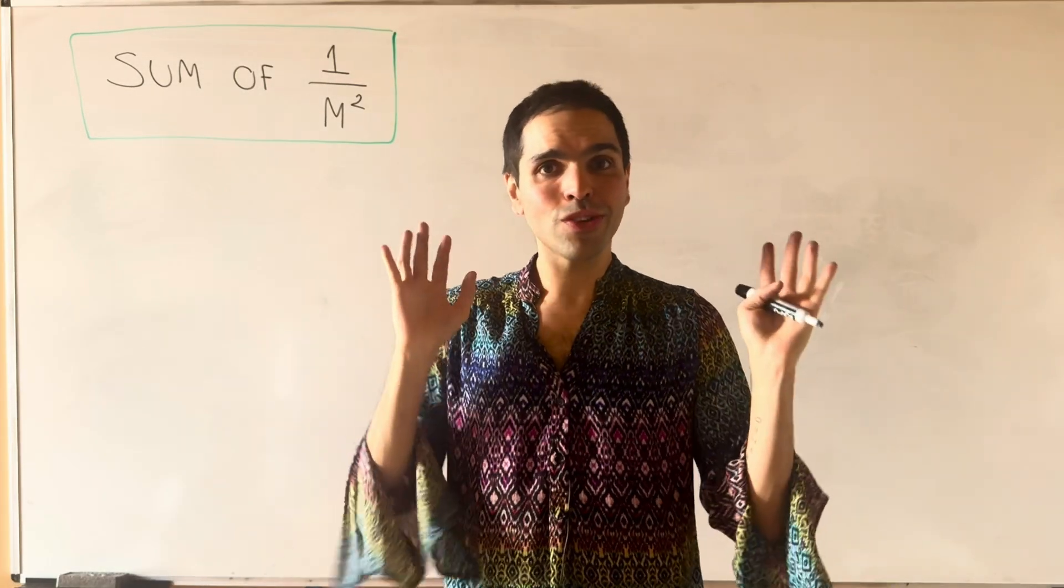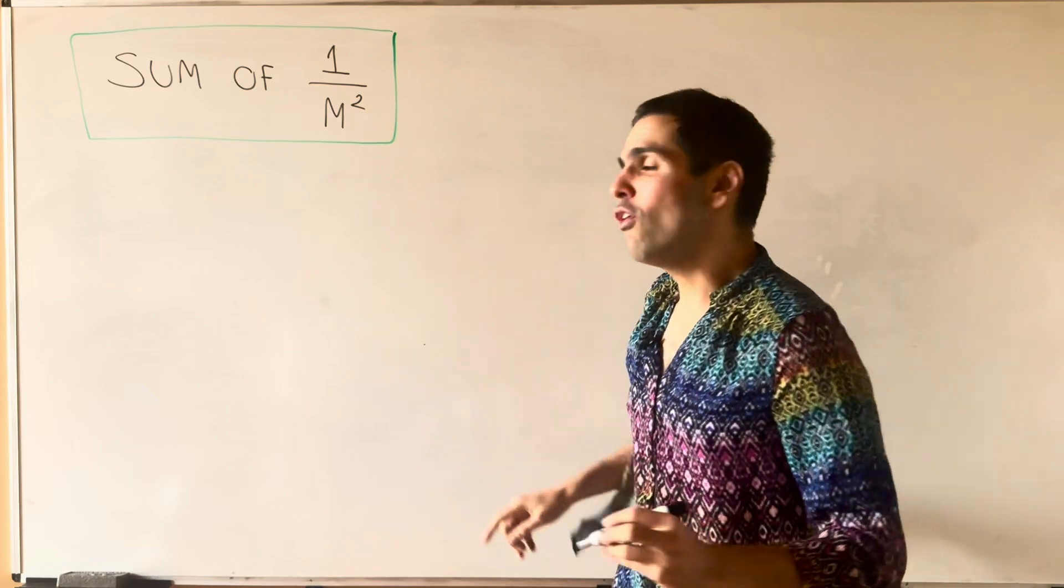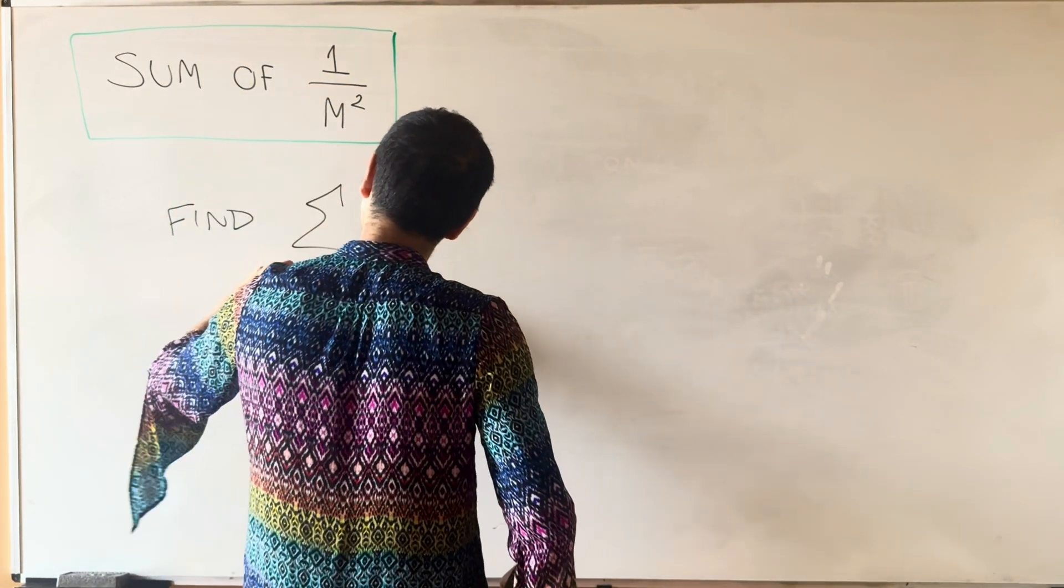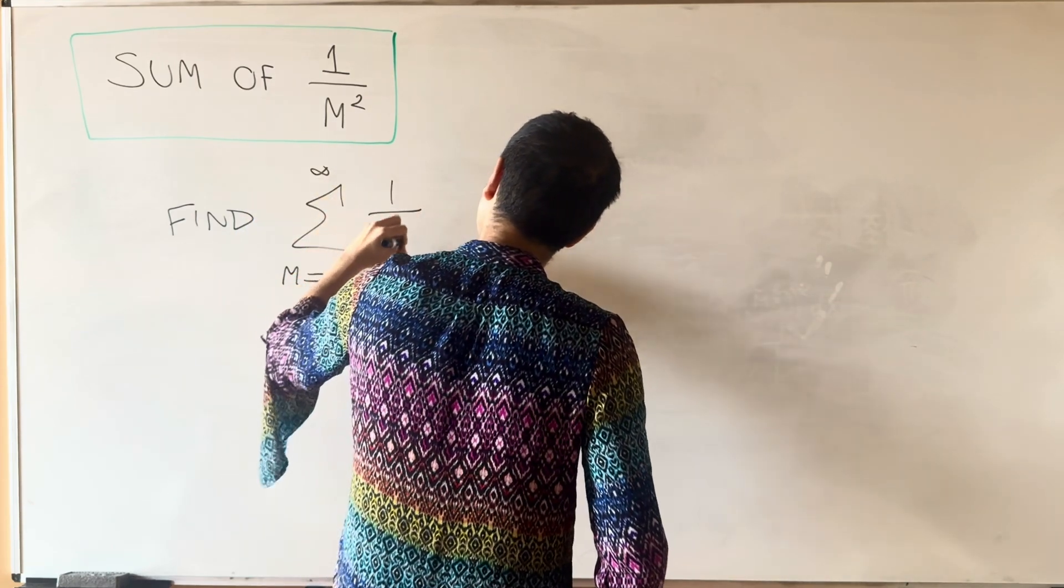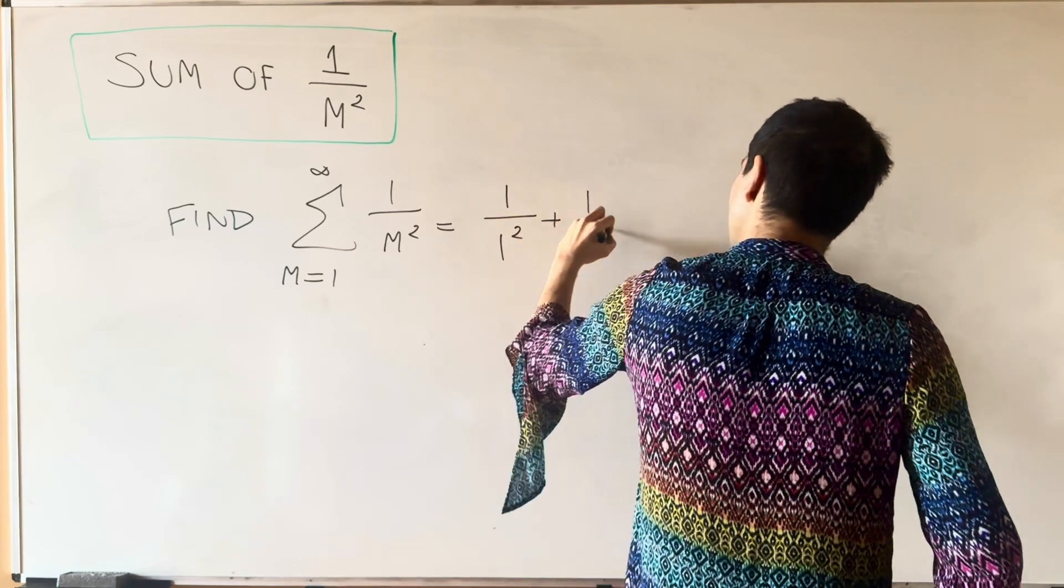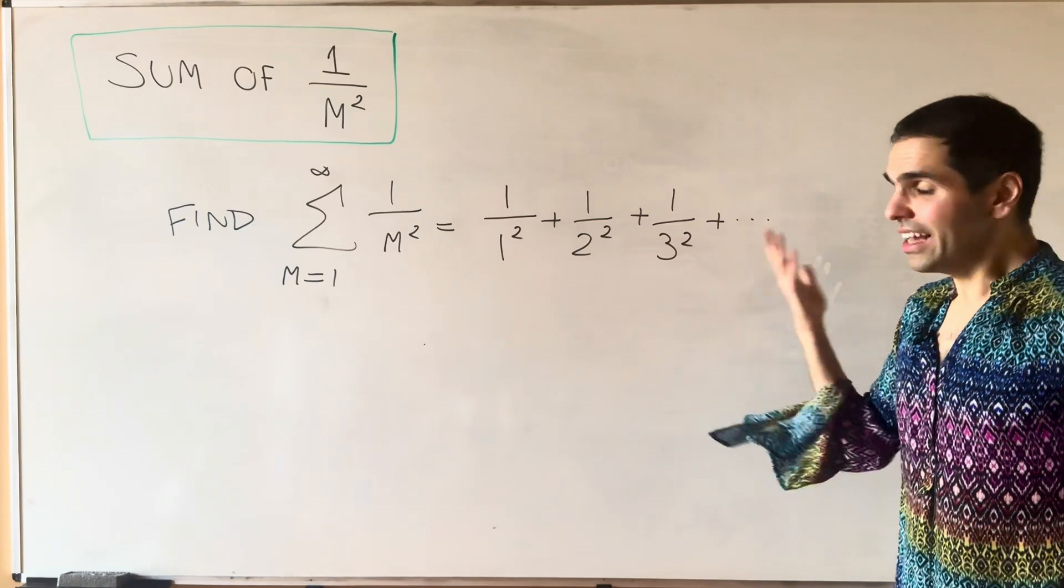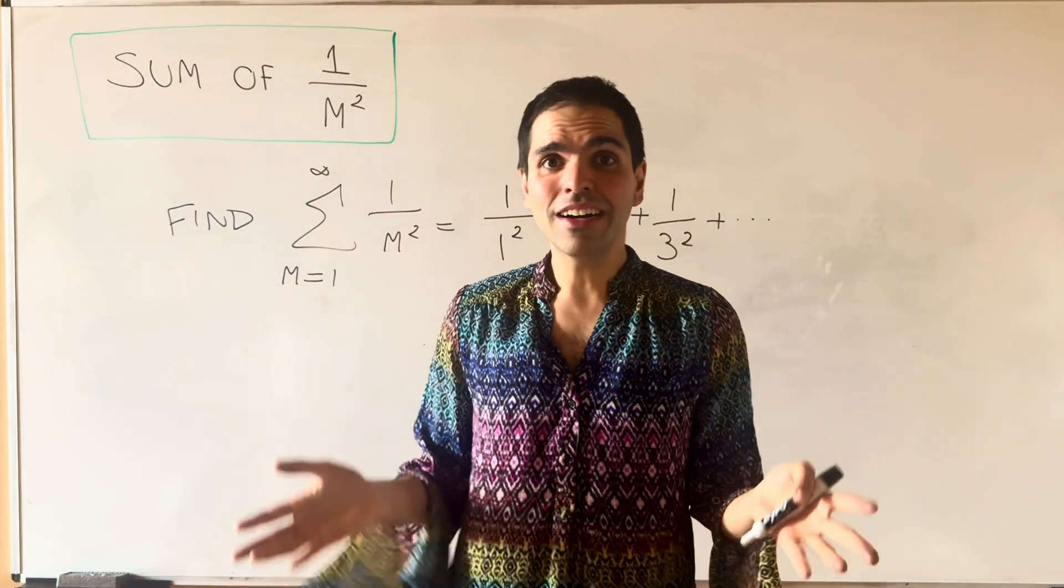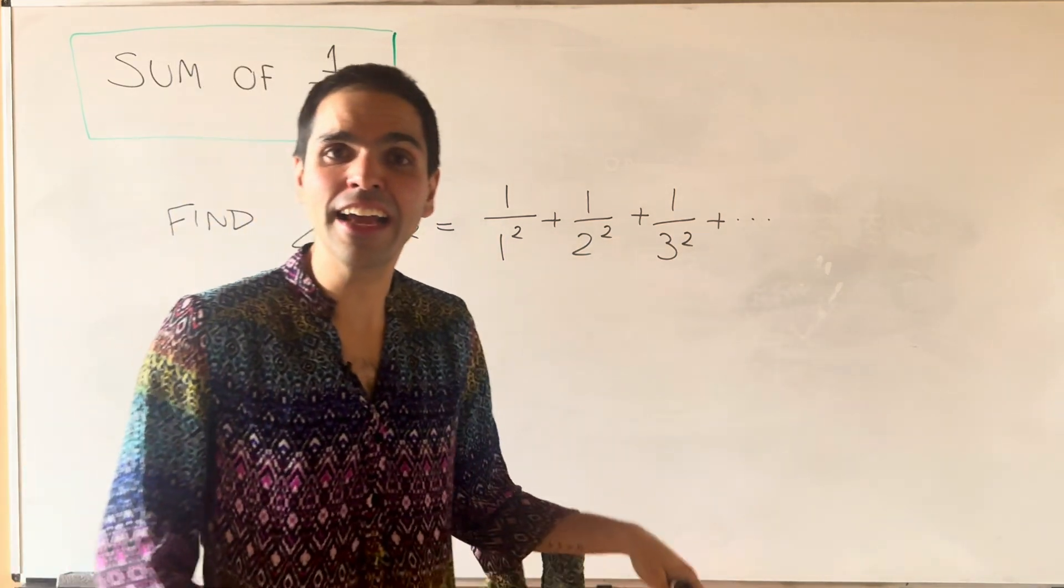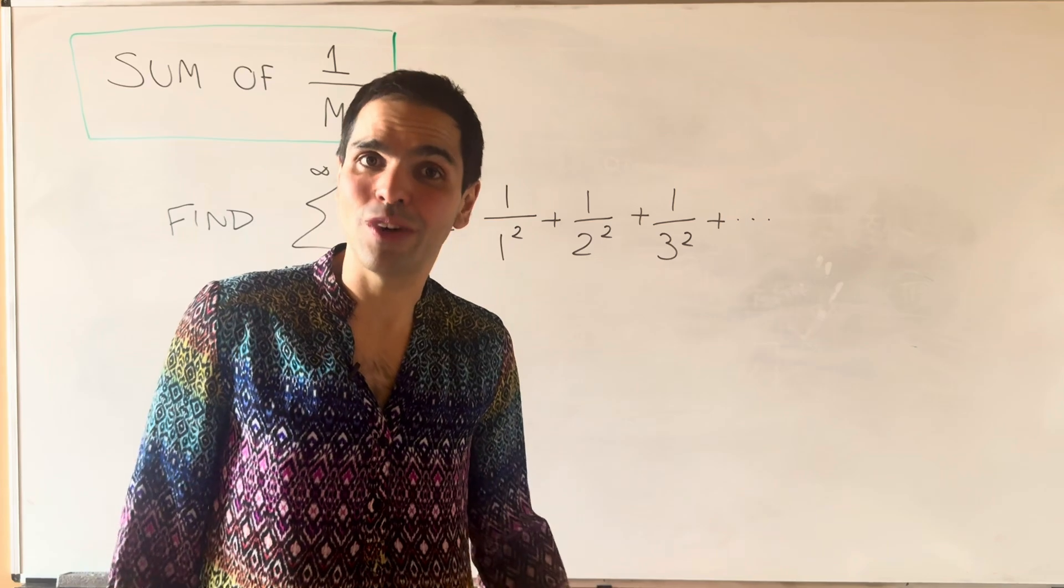Thanks for watching, and today we will do the unbelievable: we will find the sum of 1 over m squared. So our goal is to find the following sum, the sum from 1 to infinity of 1 over m squared, which is really 1 over 1 squared plus 1 over 2 squared plus 1 over 3 squared, etc. And this is incredible because your calculus instructor may have told you that this sum is finite, but never told you what it is, but in this video we will figure out what it actually is.